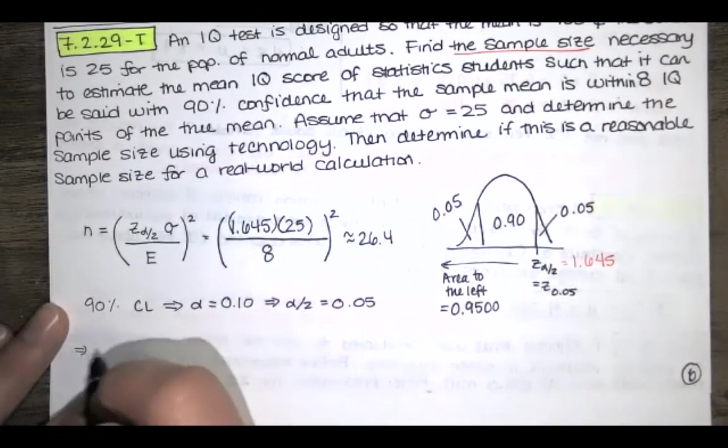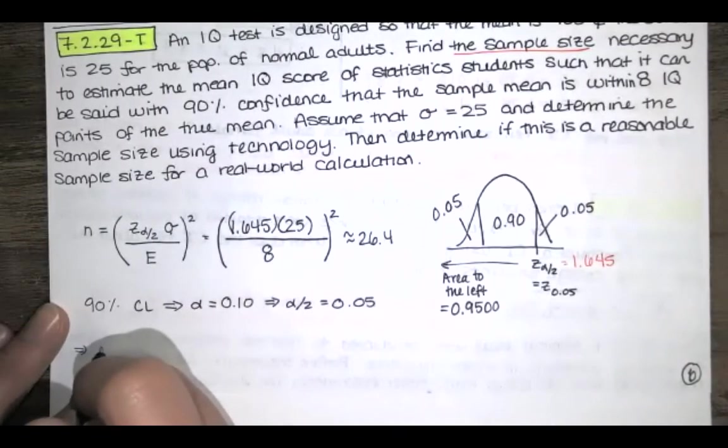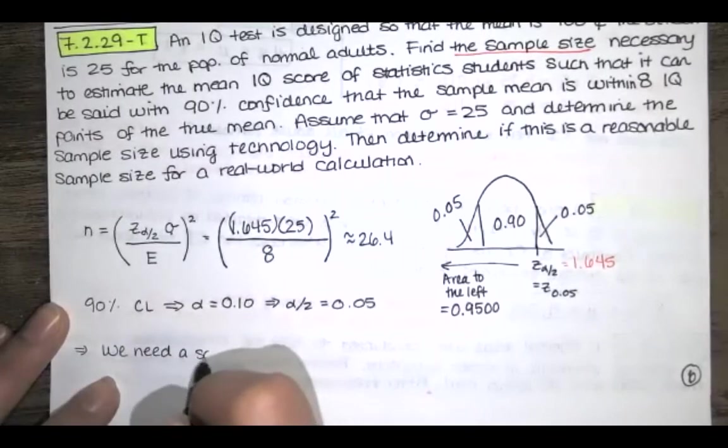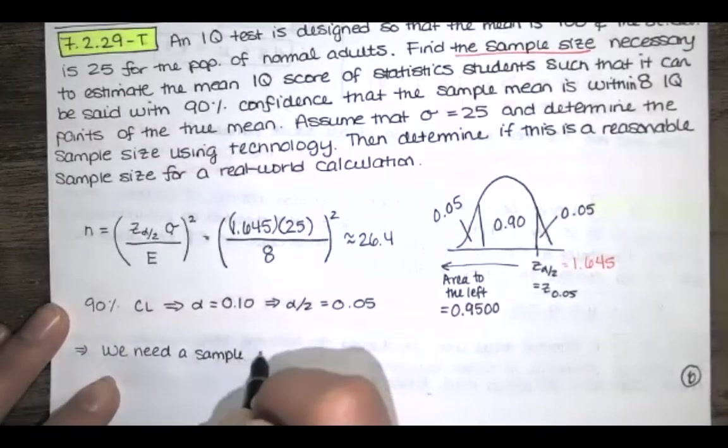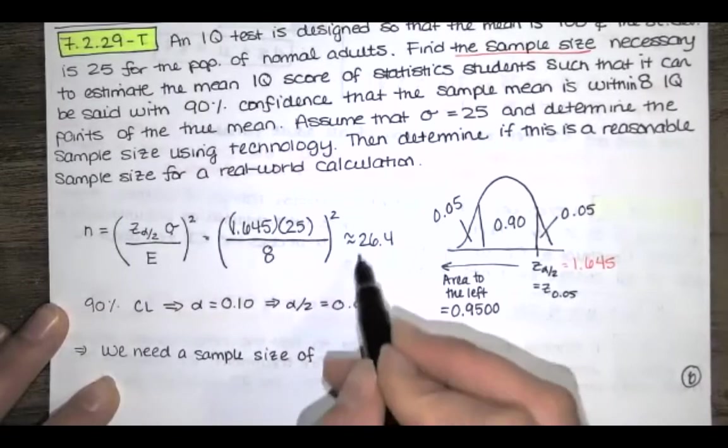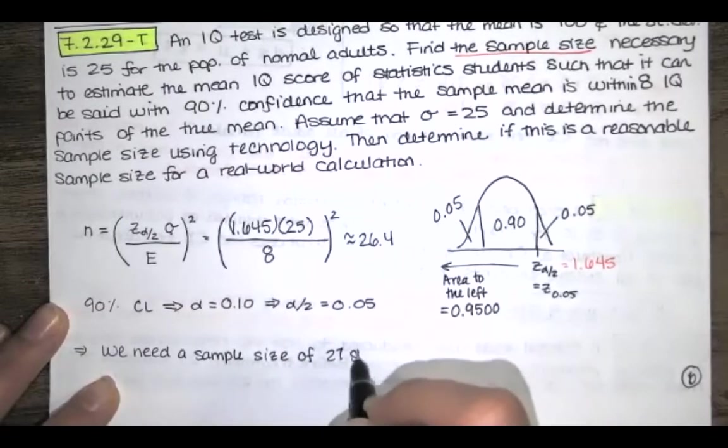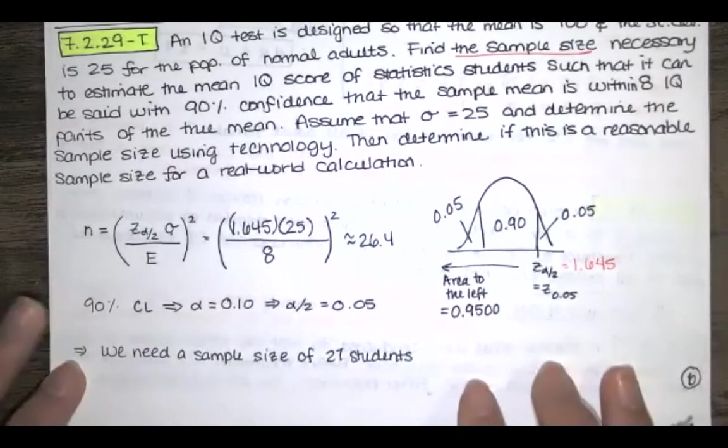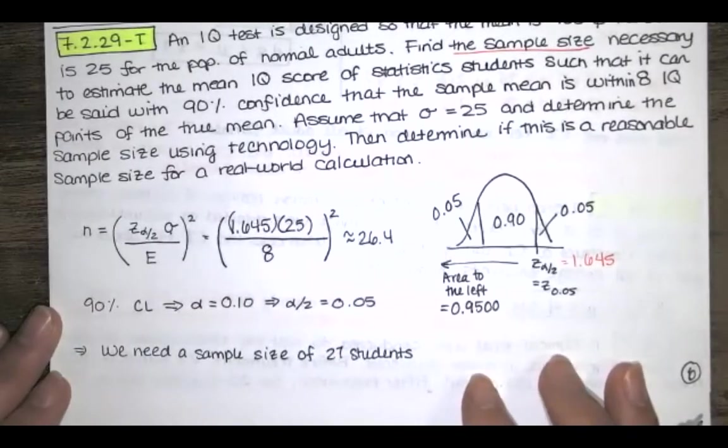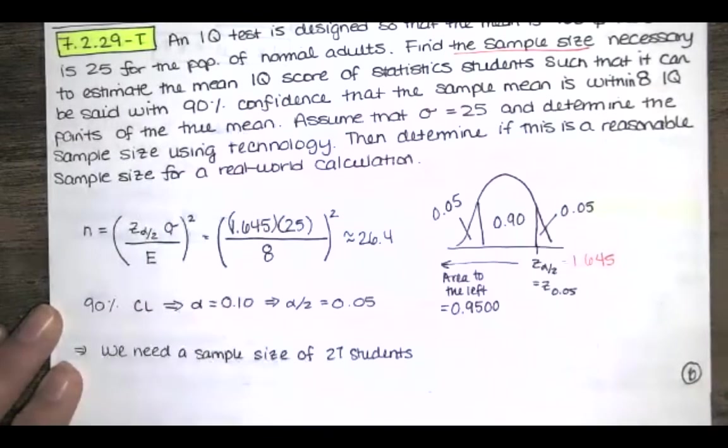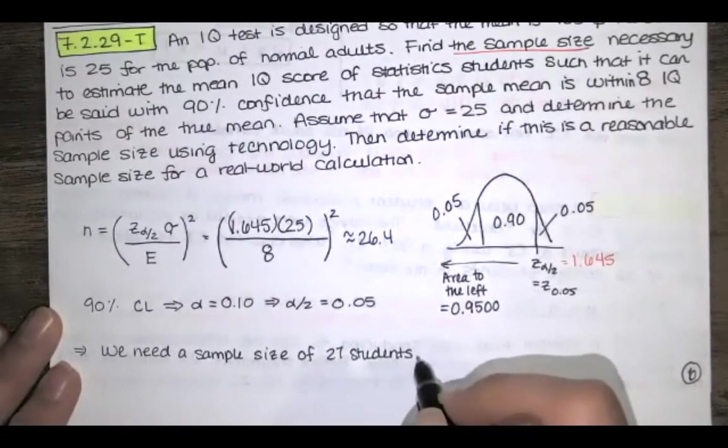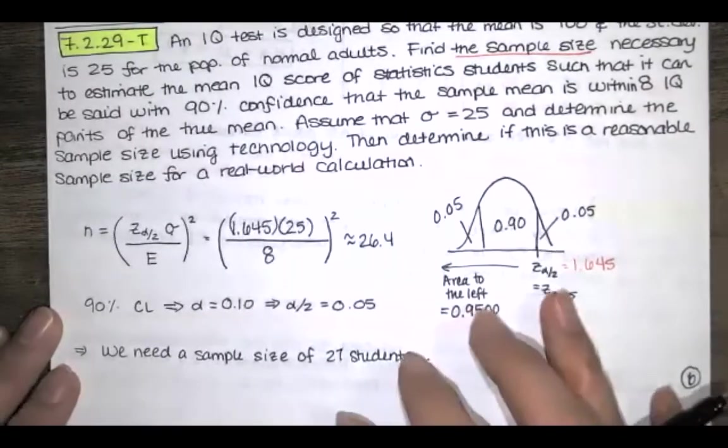So we need a sample size of 27 students. We're rounding up to find the sample mean with 90% confidence and an error of no more than eight points.